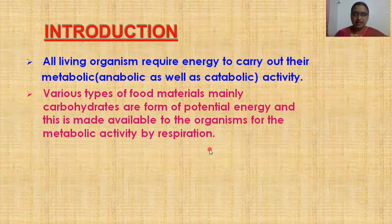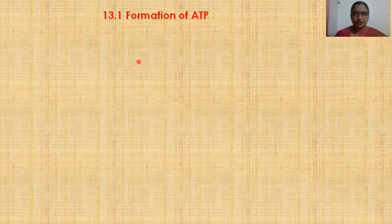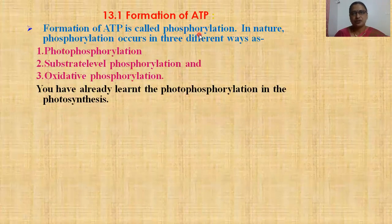The available potential energy for metabolic activity in all living organisms is in the form of chemical energy. The long form of ATP is adenosine triphosphate, which is an energy-rich molecule. The formation of ATP is called phosphorylation.